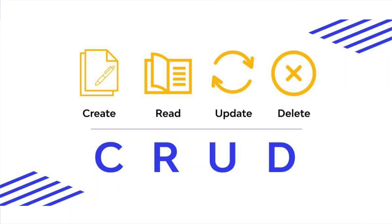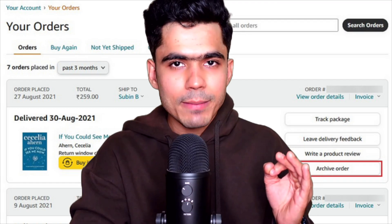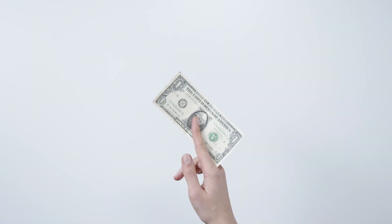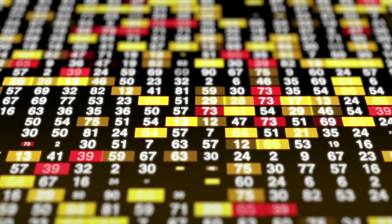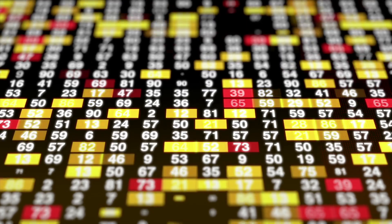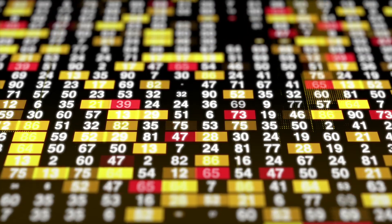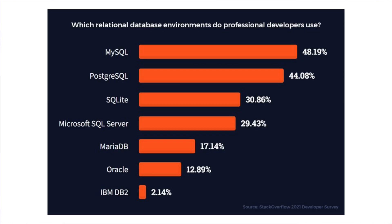OLTP systems are mainly designed for CRUD operations: Create, Read, Update, Delete. When you order something from Amazon, purchase something, or make a payment online, all of these things should happen in real time and a record of your transaction should be created. OLTP systems are designed for faster Read, Write, and Update. Examples of OLTP systems are mainly MySQL, PostgreSQL, etc.